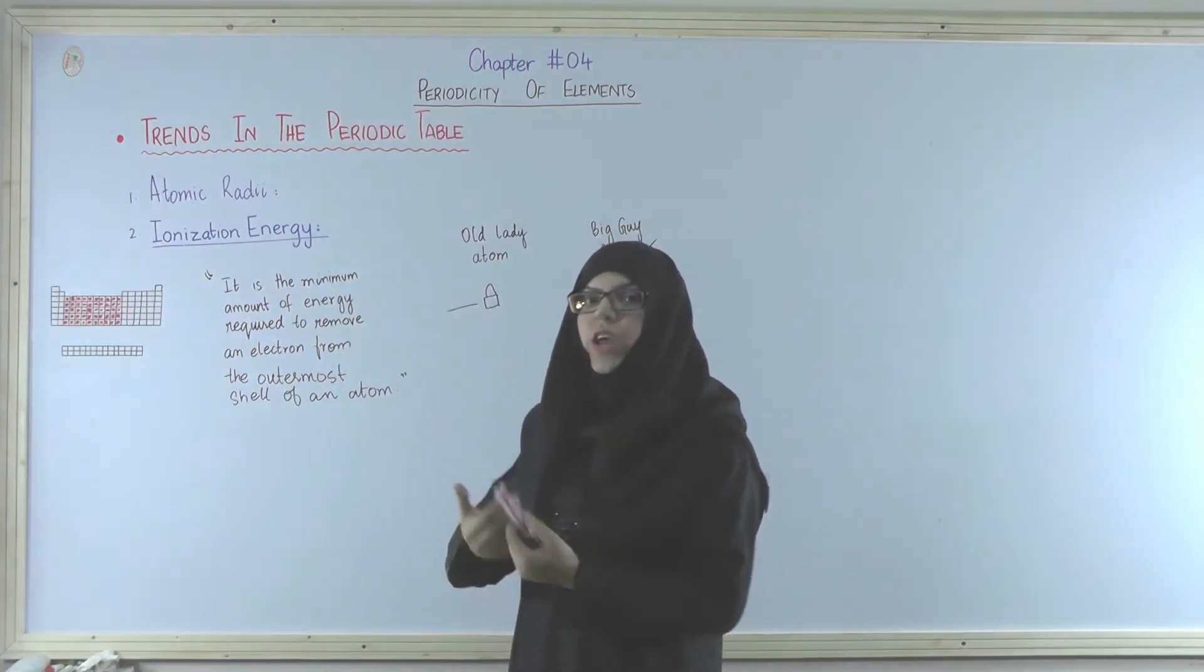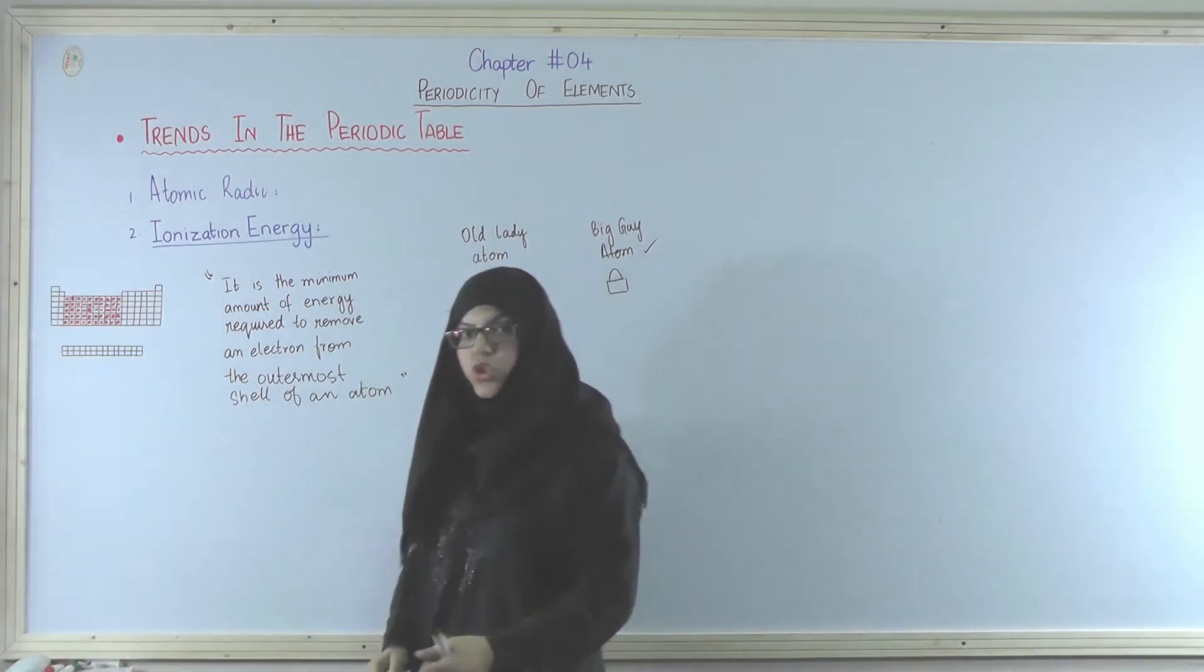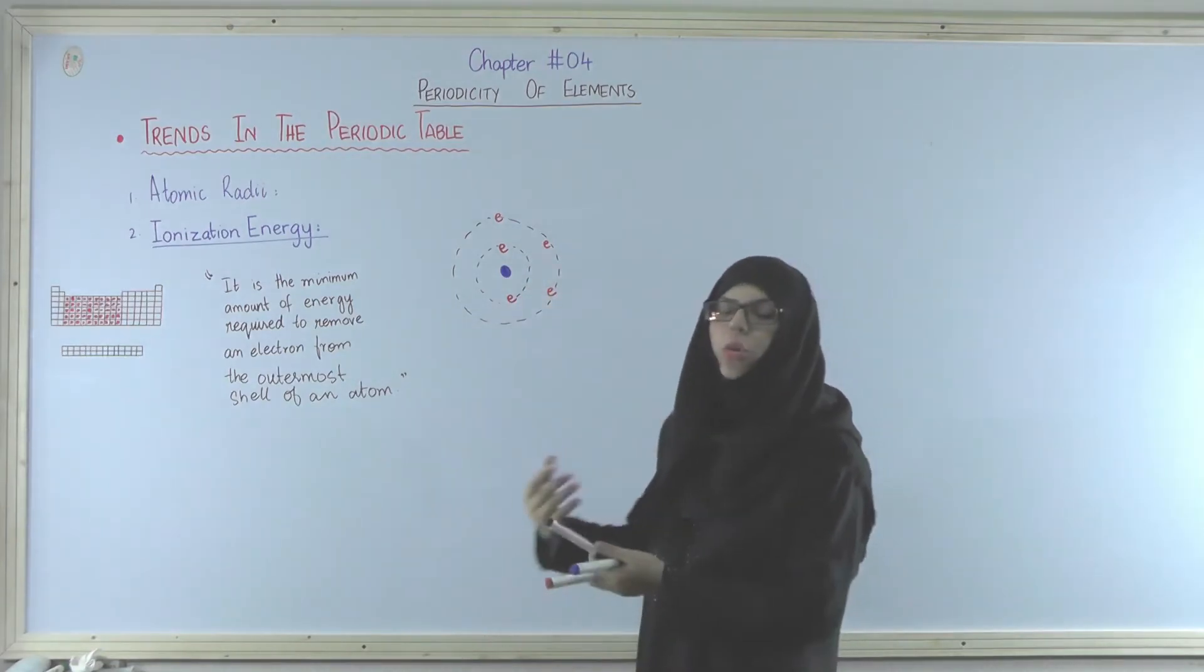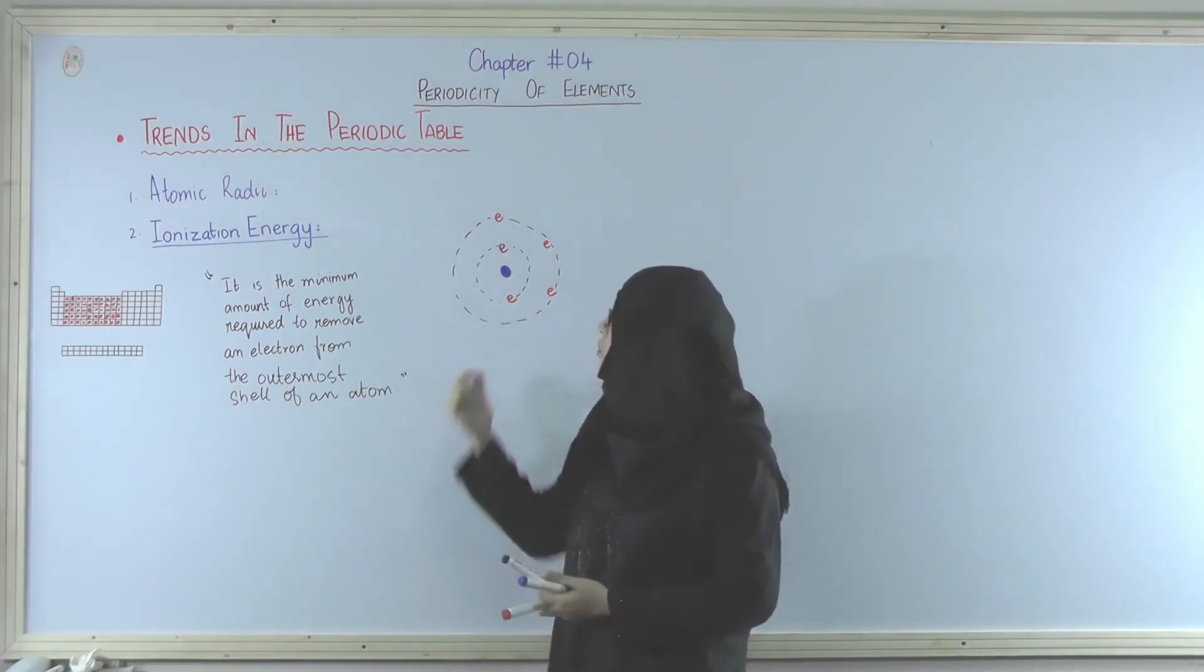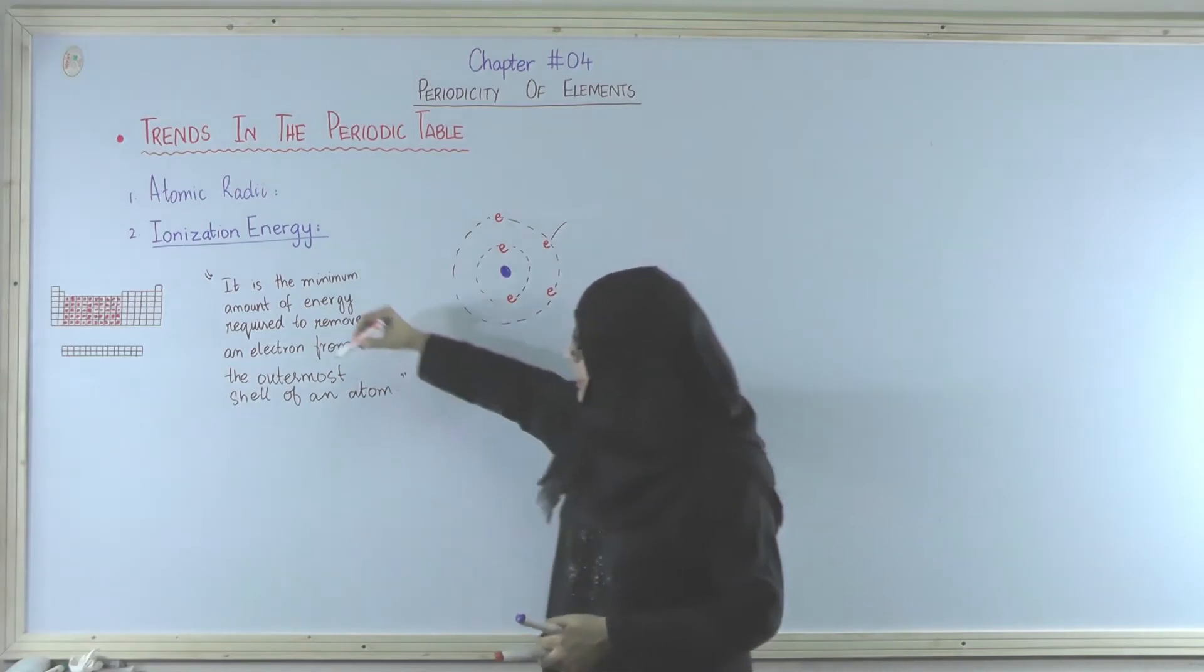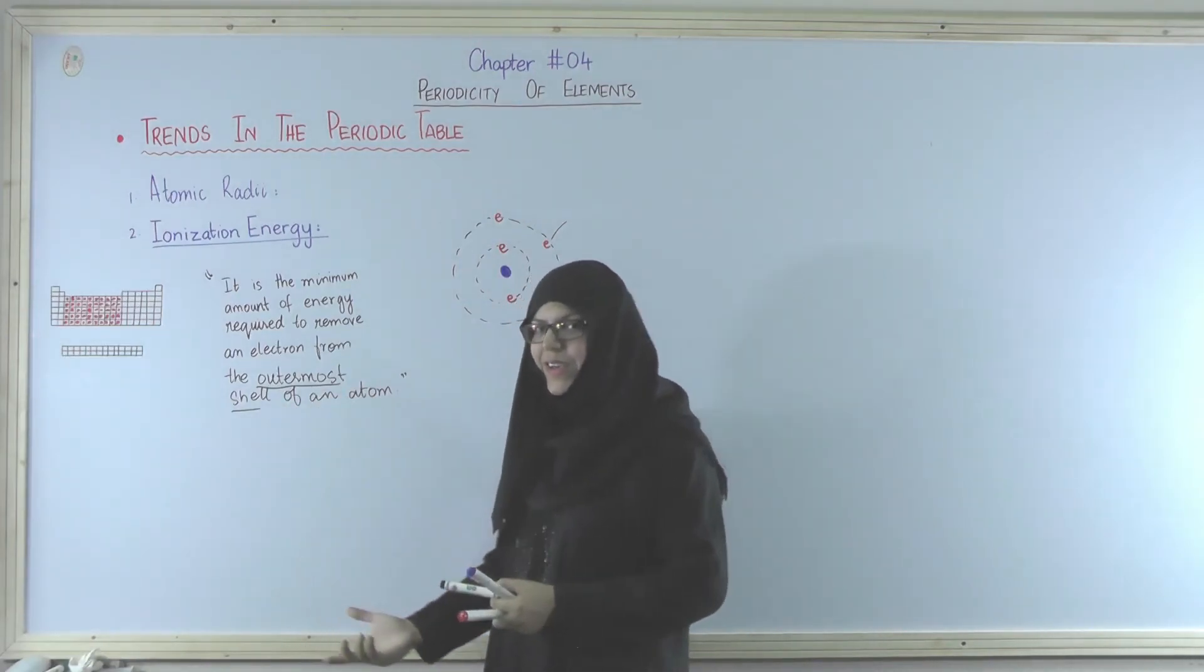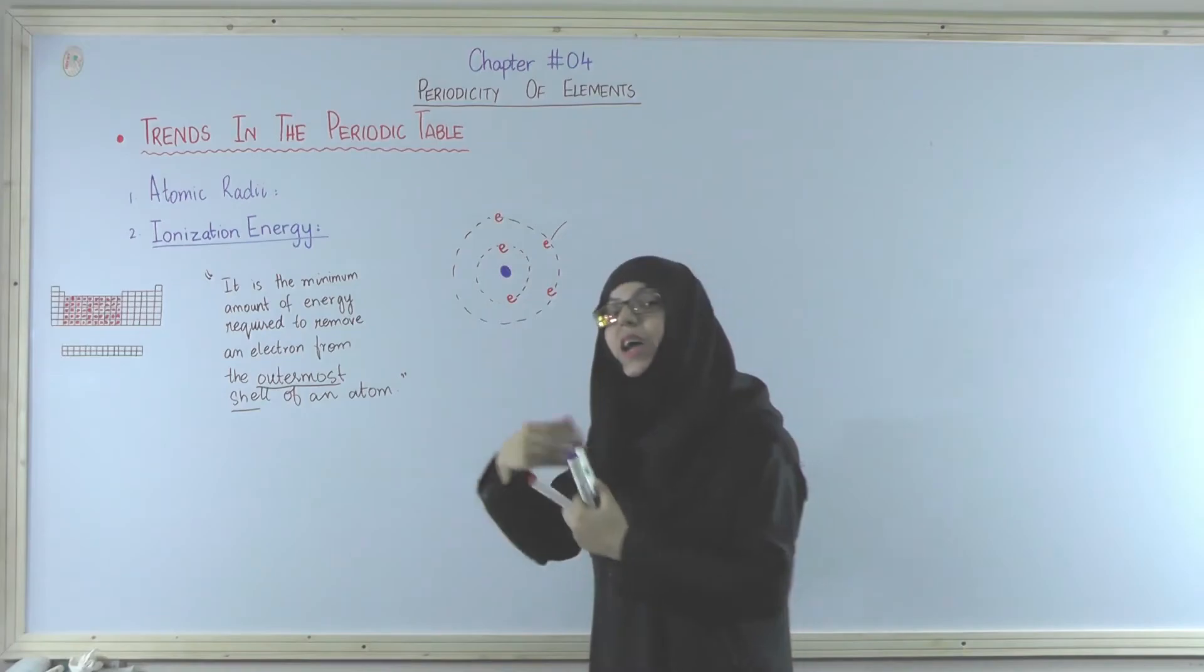Now if you are talking in terms of atom let us draw a structure of atom to show it more clearly. So here is an atom. Iske nucleus se iske shells ka distance we know atomic radii and atomic size we have studied. So the amount of hold or the amount of strength will be reduced in the outermost shell as compared to the innermost shell. So what happens if we can easily remove from the outermost shell, that is why we say that outermost shell mein se electron kitni easily se nikala jaye aur uske liye jo energy lage. Because it is more easier ke hum outermost shell mein se nikalen than it is to take out an electron from the innermost shell ya inner shells.